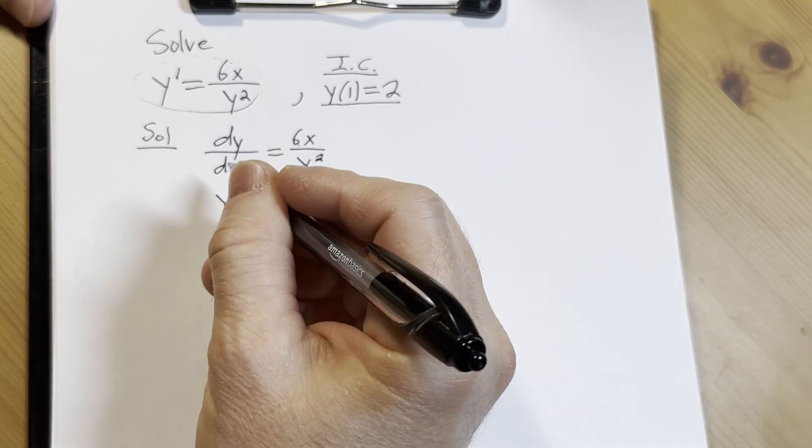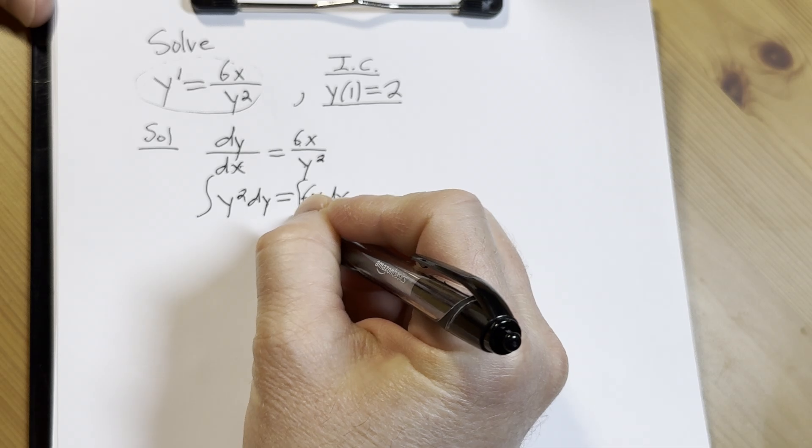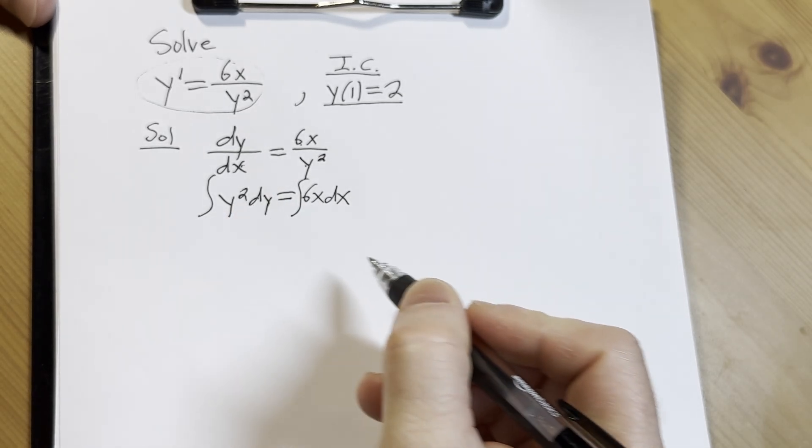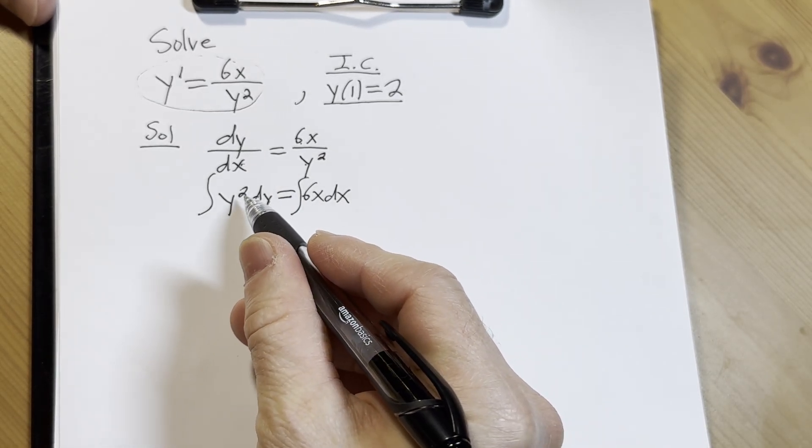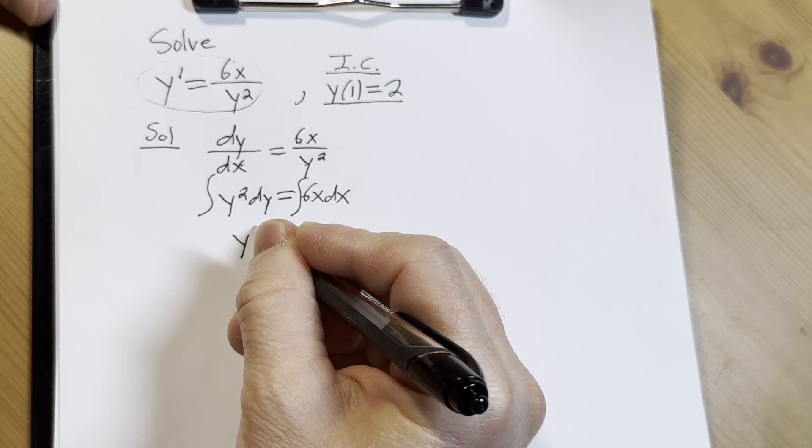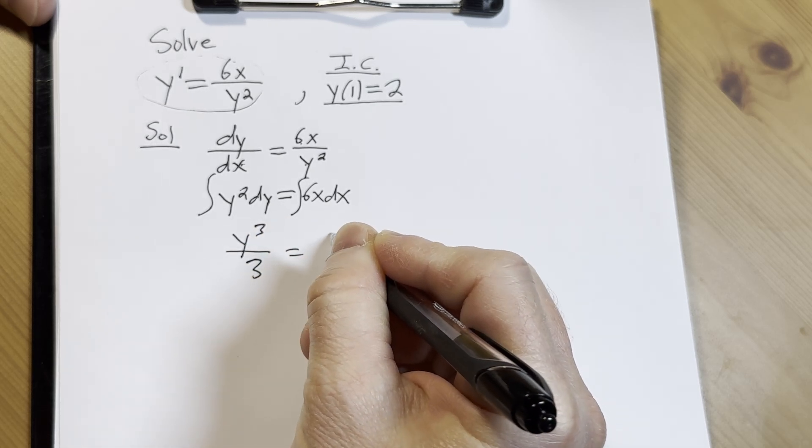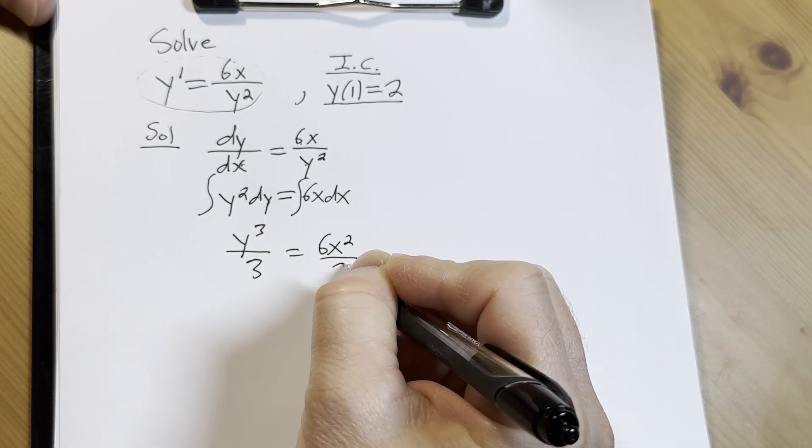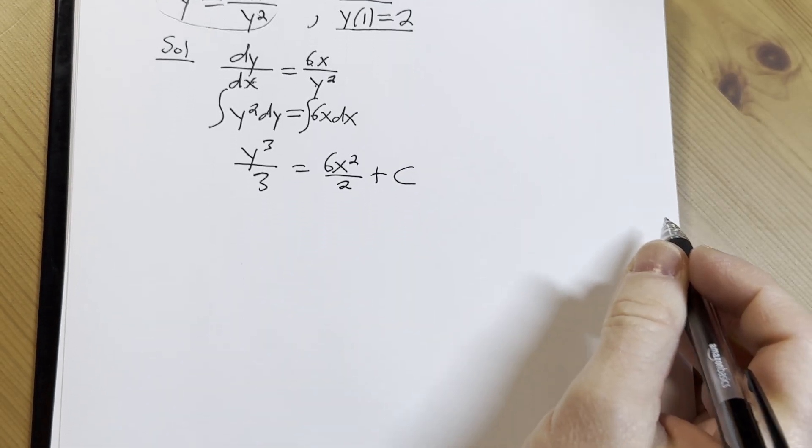Okay, and now we can integrate both sides. Applying the power rule here to the left hand side, 2 plus 1 is 3, so we get y cubed over 3 equals 6x squared over 2 plus our constant of integration, capital C.